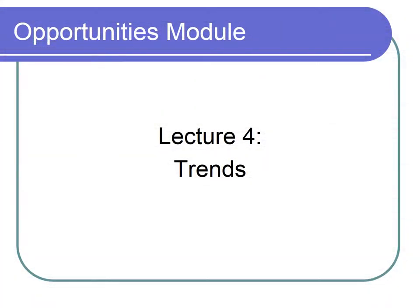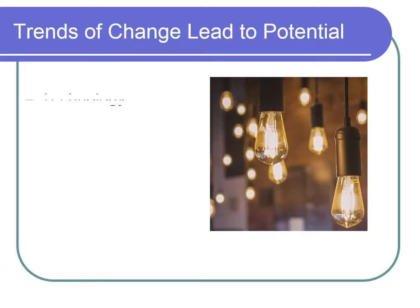Let's begin by talking about trends — the four main areas where trends come from. One is technologies. We think about that a lot; we all carry our smartphones. There are other kinds of technologies that we also find useful or interesting, including different kinds of pharmaceuticals. We sometimes think only of information technology, but there's also pharmaceuticals and alternative energy sources.